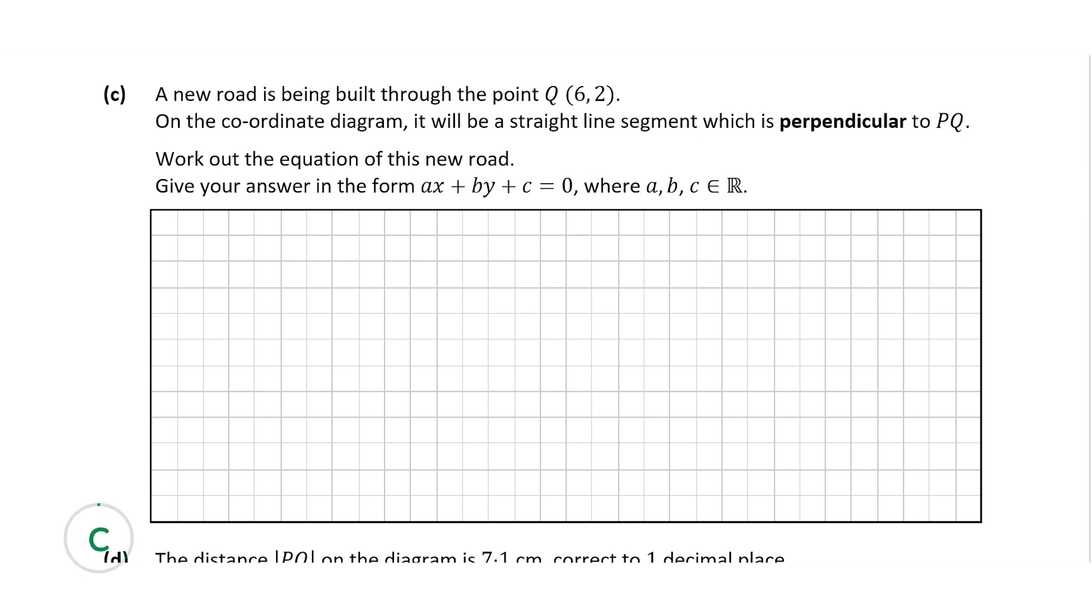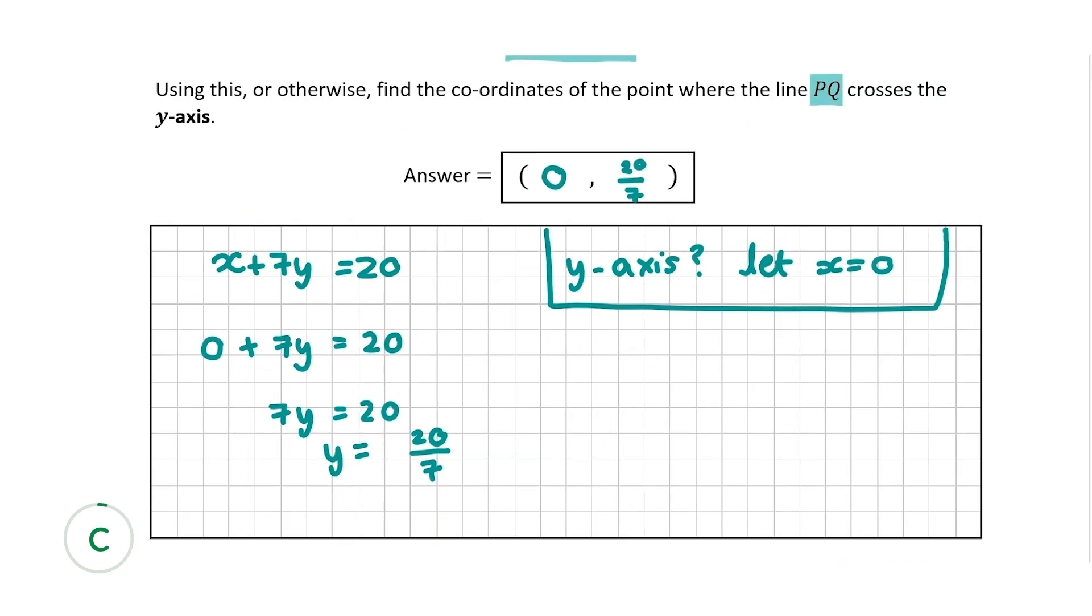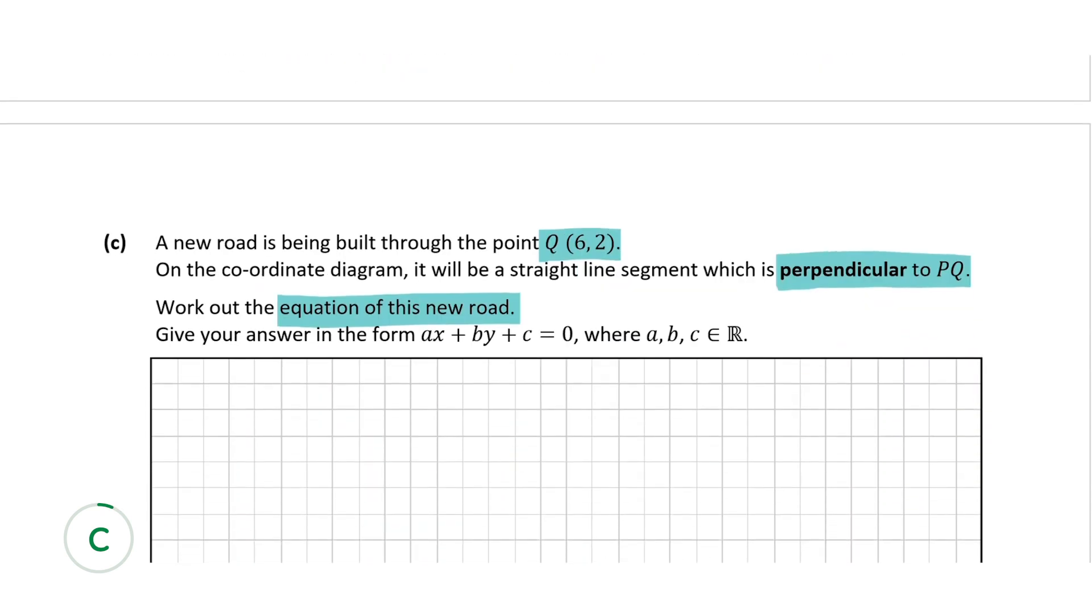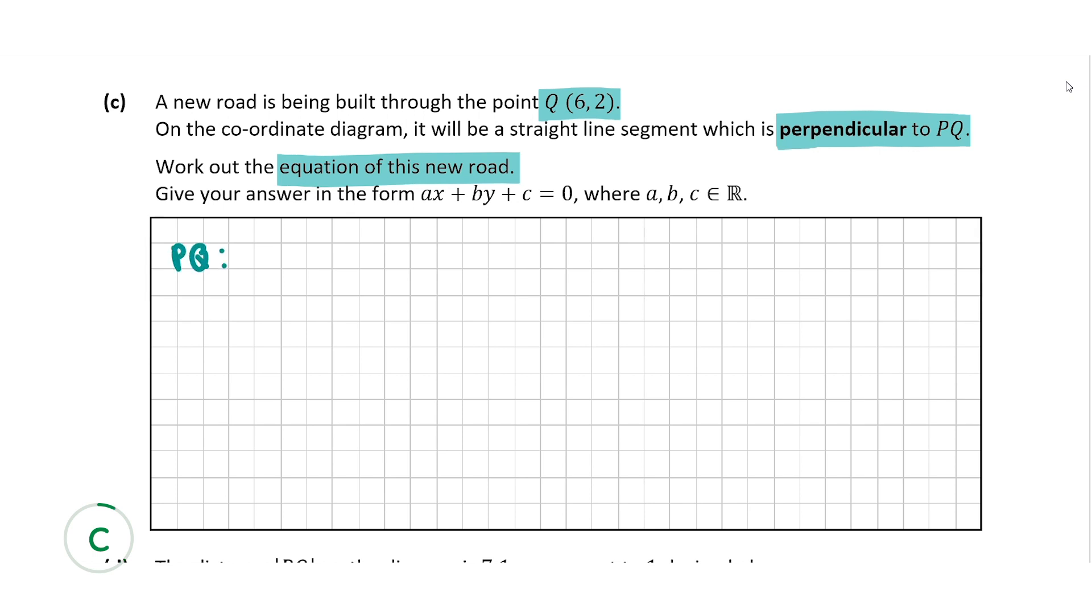So now question C tells us that a new road is being built through the point Q, which is (6, 2). On the coordinate diagram, it will be a straight line segment, which is perpendicular to PQ. So we know the equation for PQ and we know that this new road or this new line is going to be perpendicular to it. We're asked to find out the equation of this new road. So let's find the equation of the old road, which is just up here. And that was x + 7y = 20. So it's just here. So I'm going to bring that down. So PQ was x + 7y = 20.